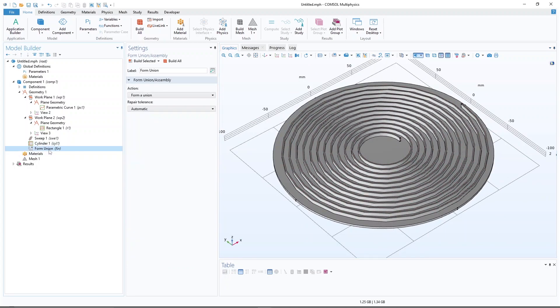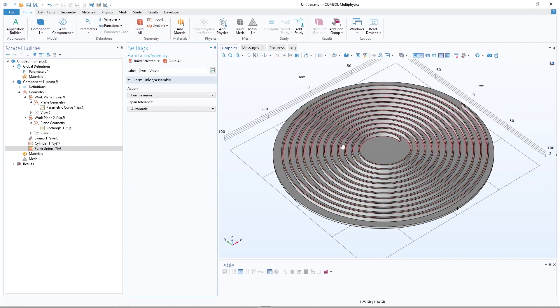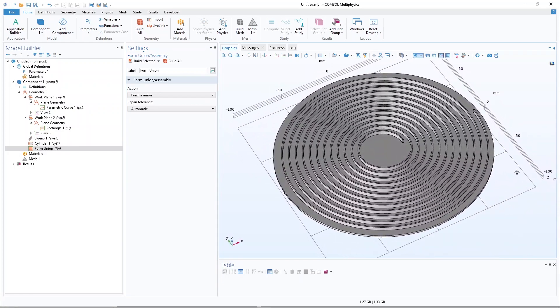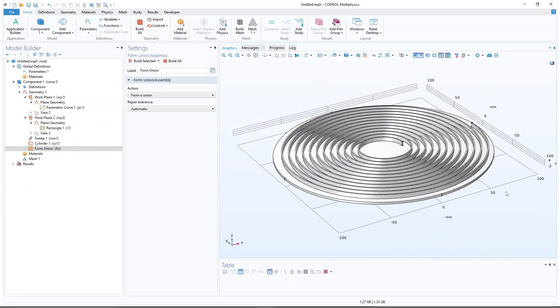So that one gives us the base cylinder. And then if you click on union and build, then you can see that the roughness will go away and you have a very nice and beautiful spiral structure on top of a disk.